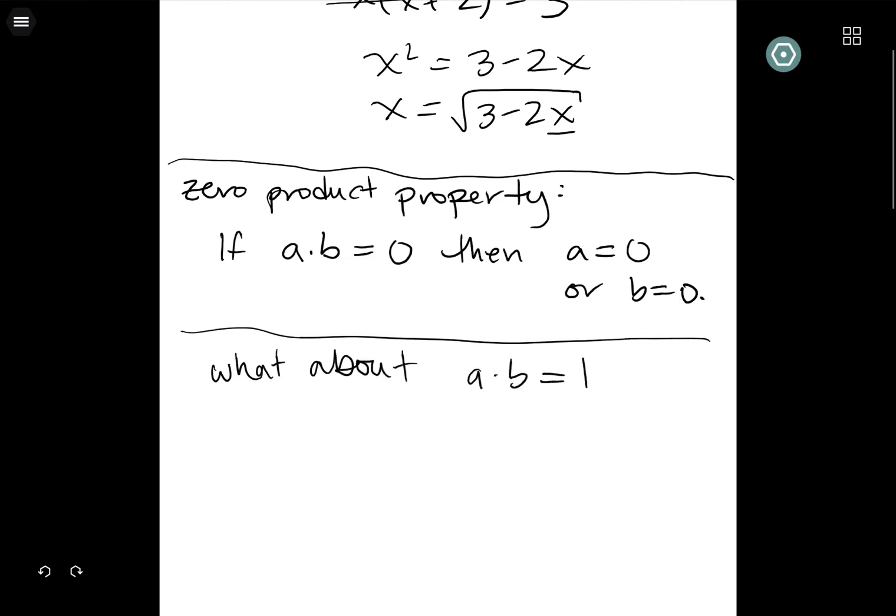What I want to be really clear about is this doesn't hold for other numbers. Let's say what about a times b equals one, or it could be five or seven or whatever? We don't know anything. Just for example, we could have one fourth times four, we could have one times one, we could have two times one half, we could have negative 30 times negative one over 30. I mean, I guess we know something - we know that the numbers are reciprocals, but we absolutely cannot draw any conclusions about what a is or what b is. So this property is very, very specific to zero.